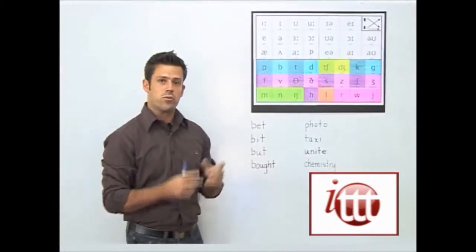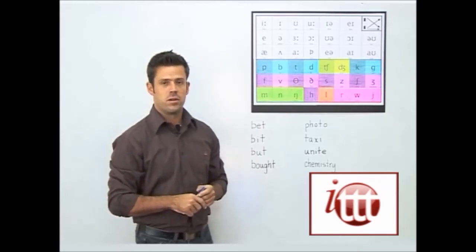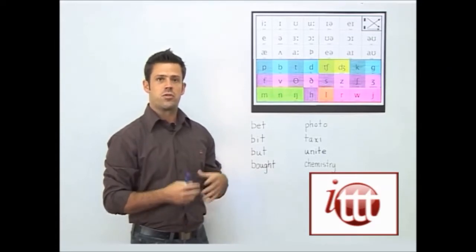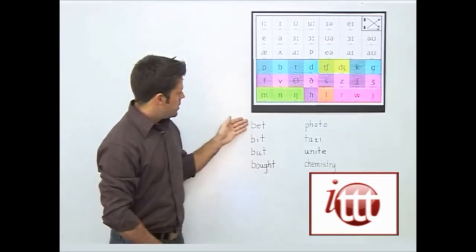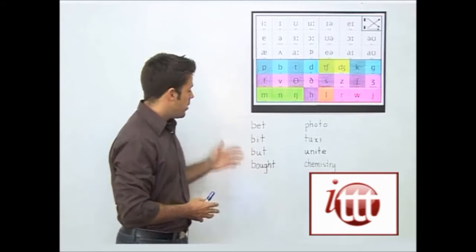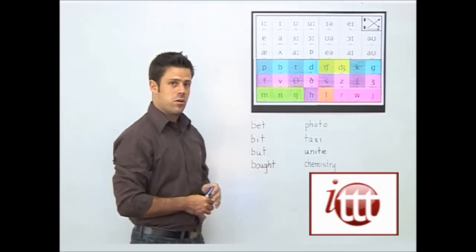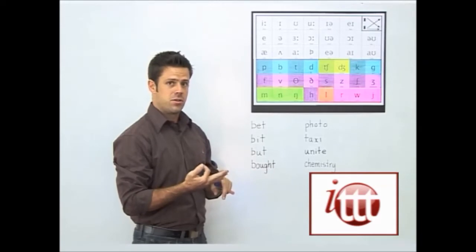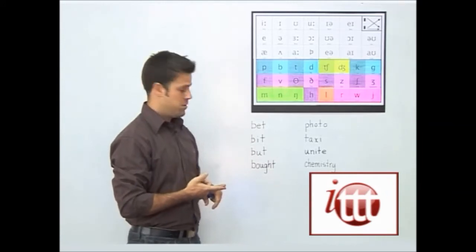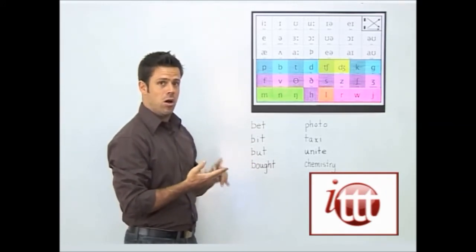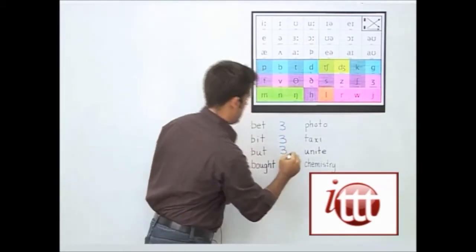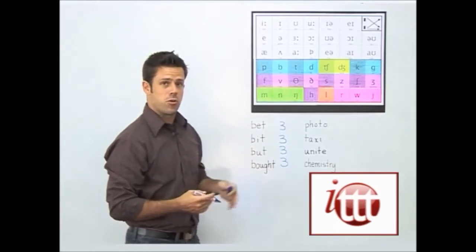Now let's take a look at how we go from traditional spellings into the phonemic spellings. The first step is identifying each unit of sound, or each phoneme, within a word. Let's look at bet, bit, but, and bought — the only difference in each one of these words is in the vowel sound. Each word simply uses three sounds.